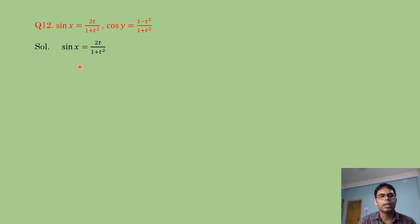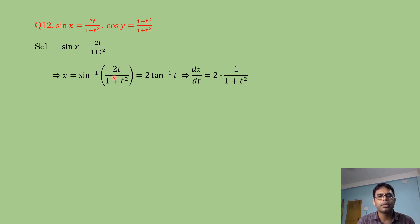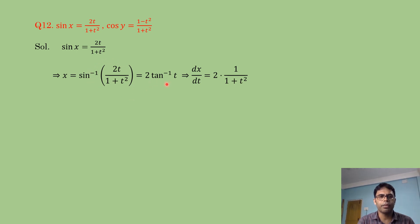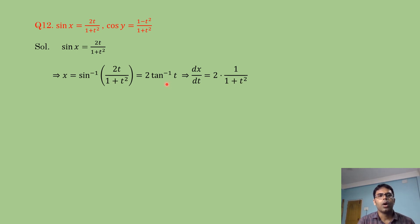We have sin x = 2t/(1+t²), so x = sin⁻¹(2t/(1+t²)). Using the inverse trigonometric formula, sin⁻¹(2t/(1+t²)) = 2·tan⁻¹t. Similarly, cos⁻¹((1-t²)/(1+t²)) = 2·tan⁻¹t. These are standard formulas from inverse trigonometric functions.